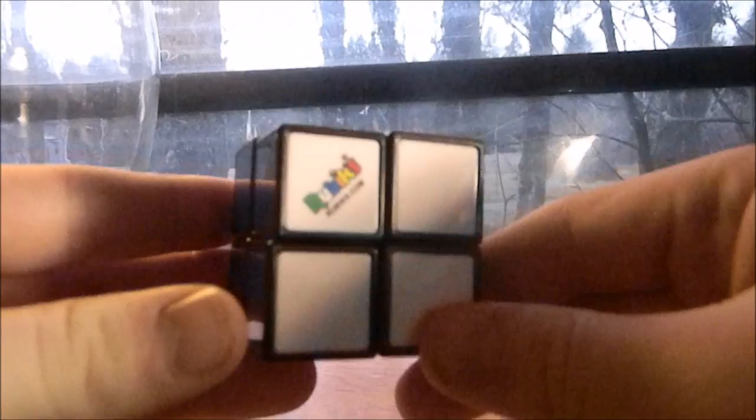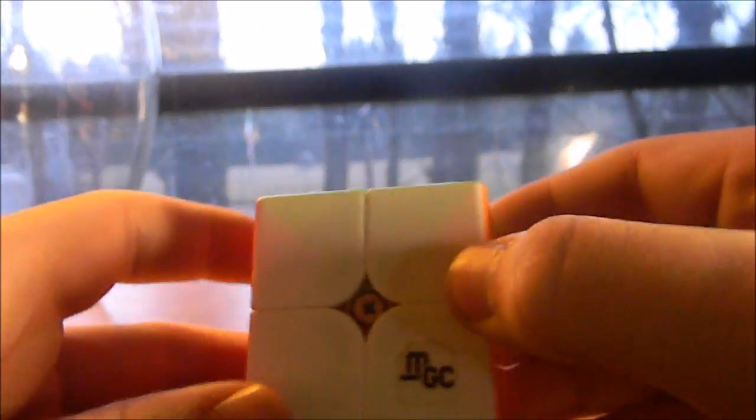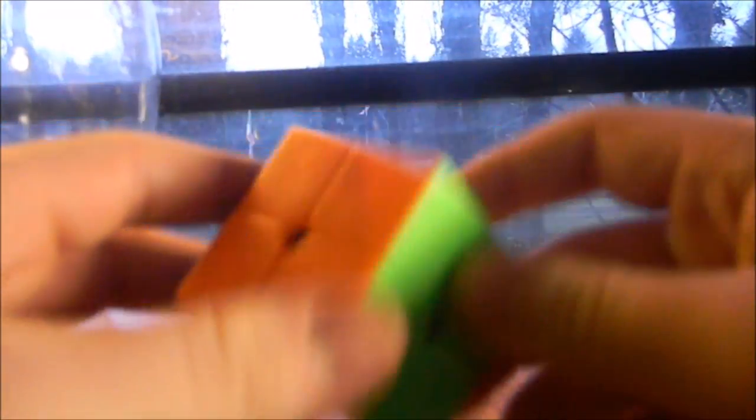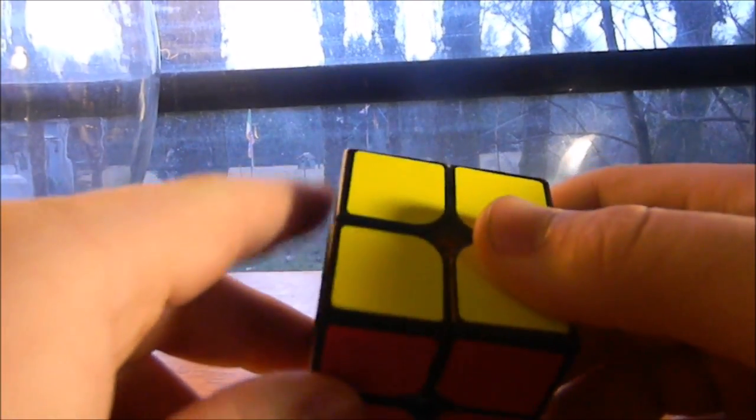Tax Olson's gonna do 2x2. This is a Rubik's brand 2x2. This is a YJMGC 2x2 and this is a Moyu 2x2. This is also a Moyu 2x2 and this is the YJMGC 2x2 Stickerless.